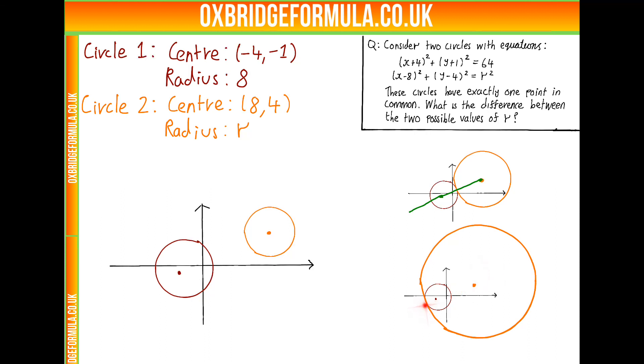And the same happens here, if we draw the two tangents of the two circles here, they're the same, so this point, this point, and this point, will be on the same line.